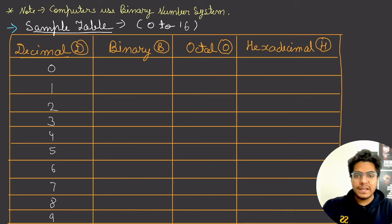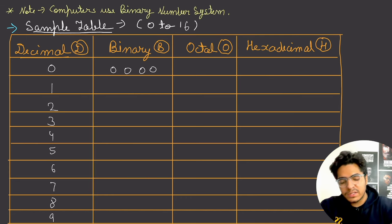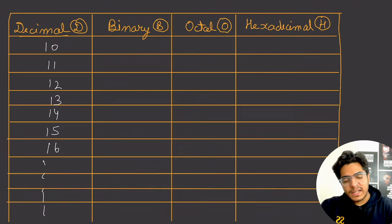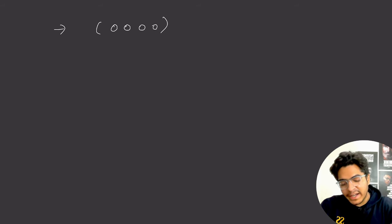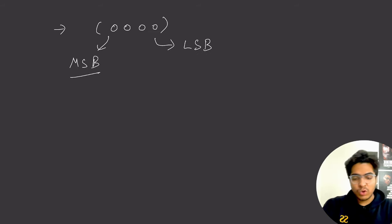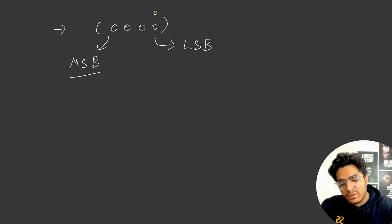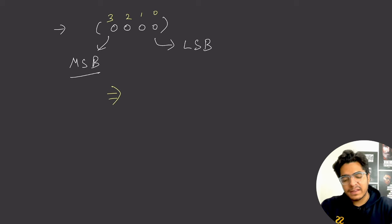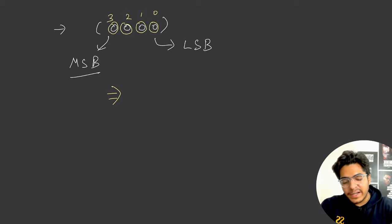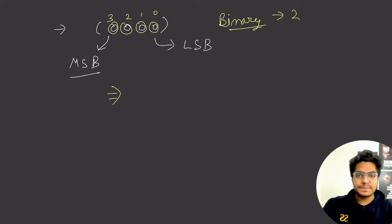Now in binary, we need to understand the concept of LSB (least significant bit) and MSB (most significant bit). The index increases from right to left: 0, 1, 2, 3. To convert binary to decimal, we multiply each coefficient by 2 raised to the power of its index. For example, for 0000 in binary: 0×2⁰ + 0×2¹ + 0×2² + 0×2³ = 0.